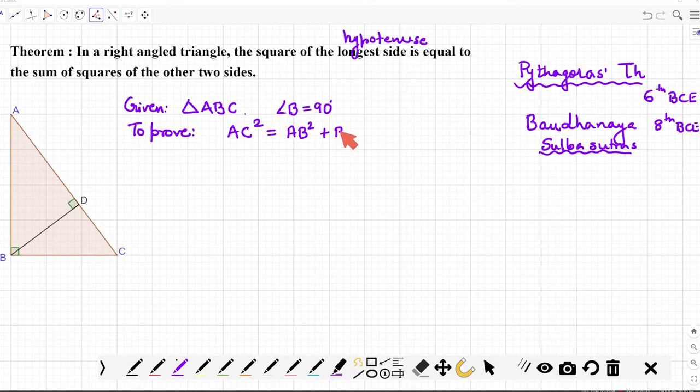And there are lots of proofs for this theorem—more than 20-25 proofs are existing. So we are going to use the concepts of similar triangles to prove this theorem here. You would have studied similar triangles by now, so let us now try to prove it.